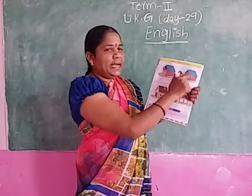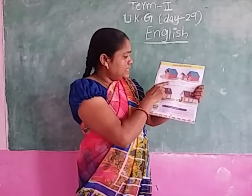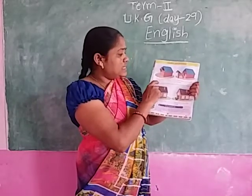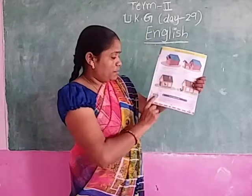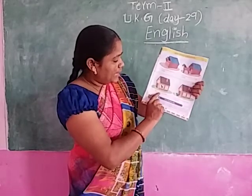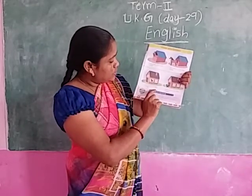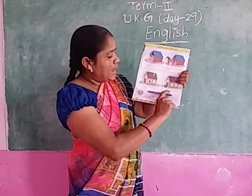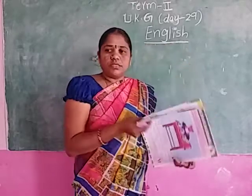Inside and outside. The horse is inside the stable. The horse is outside the stable. The cat is inside the house. The cat is outside the house.